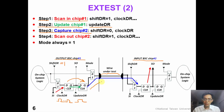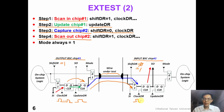In step 3, we capture the response at chip number 2. We control shift DR to 0 and apply one single clock DR. In step 4, we can now scan out the content in chip number 2. At this time, we control the signal shift DR to 1 and apply a sequence of clock DR. In this way, we can observe the content in the boundary scan cell of chip number 2. Please note that during this process, the control signal mode is always equal to 1.